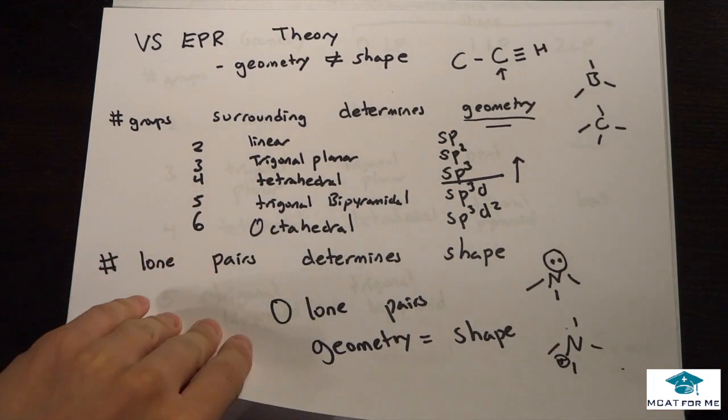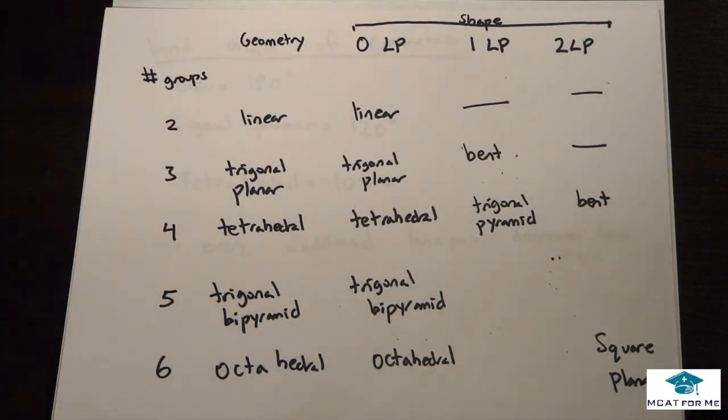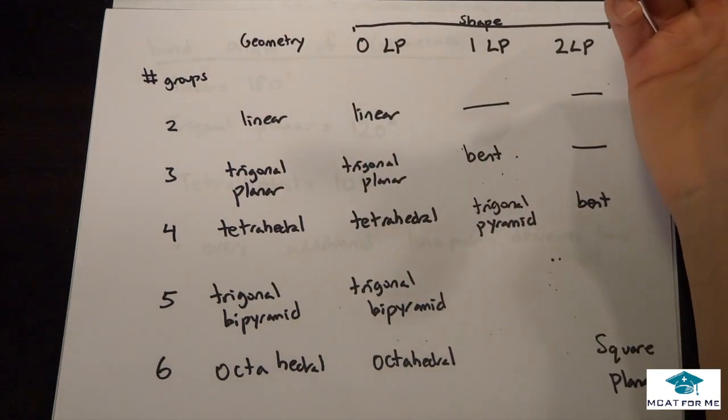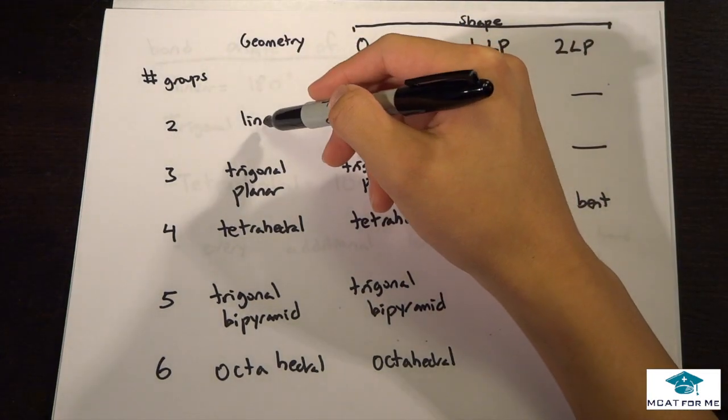Because one has one lone pair and one has zero lone pairs. And we'll see how to determine it based on this table right here - very important for us.